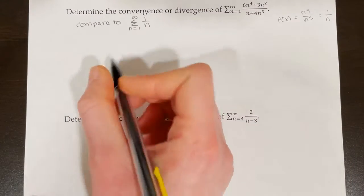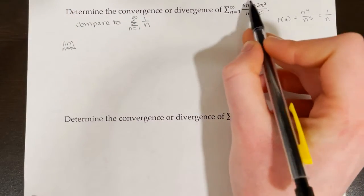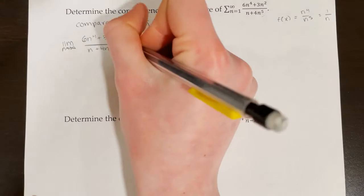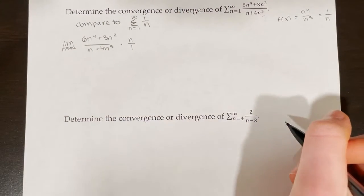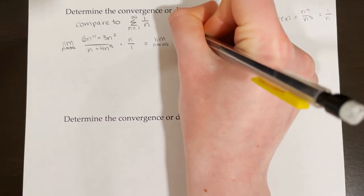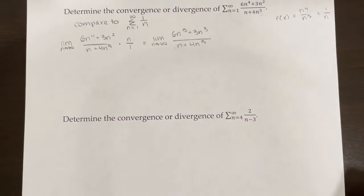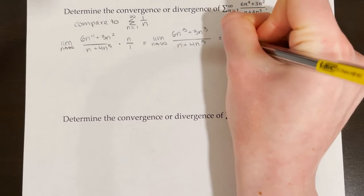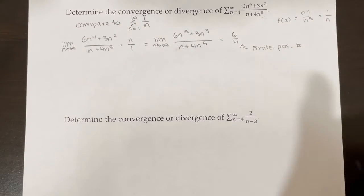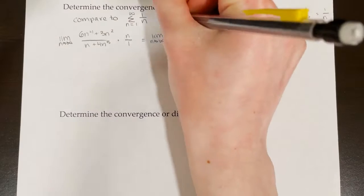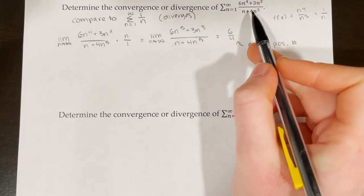We take the limit as n approaches infinity of a_n divided by b_n: (6n⁴ + 3n²) over (n + 4n⁵) times n over 1. Distributing gives 6n⁵ + 3n³ over n + 4n⁵. Focusing on the limit, we only care about 6n⁵ and 4n⁵, giving a horizontal asymptote of 6/4, a positive finite number. Since we get a positive finite number, we can compare behaviors. The series 1/n diverges as the harmonic series, so this series also diverges by limit comparison.